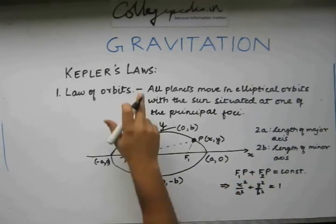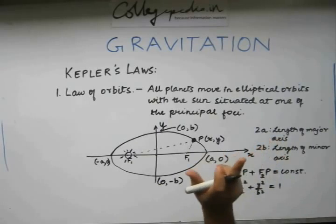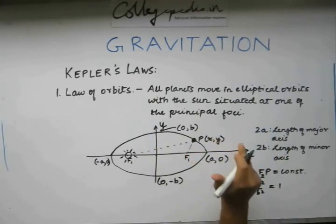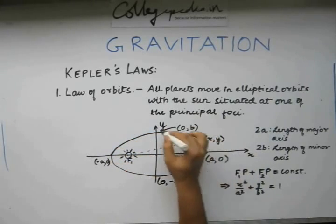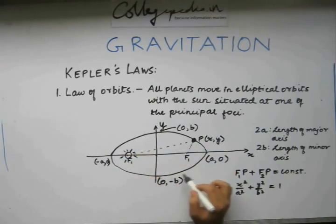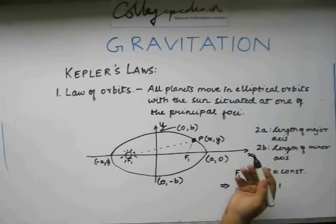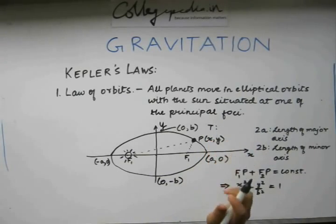Now, the law of orbits states that all planets move in elliptical orbits with the sun situated at one of the principal foci, which is this planet is going to follow this elliptical path around the sun with this completing its one revolution in say time T. That capital T is the period of revolution.